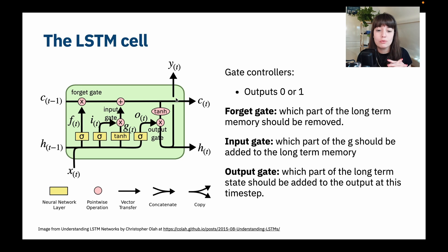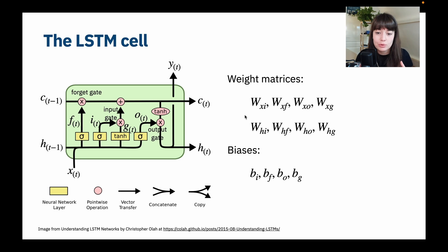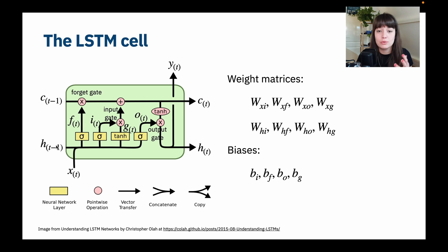The parameters in LSTM cells are more than those in a simple RNN cell. We basically have eight different weight matrices. For every activation function — each gate controller — we have a separate weight matrix for the input and also for the hidden state coming from the previous time step. Similarly for biases, for all parts where we do some calculation with the activation functions, we have a different set of biases.